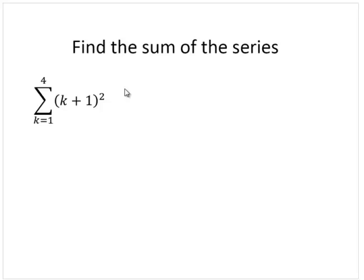Find the sum of the series, and here we're given summation notation. So we have sigma k equals 1 to 4 of k plus 1 squared.